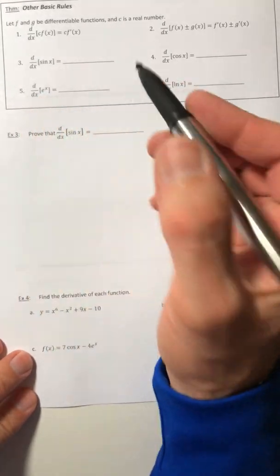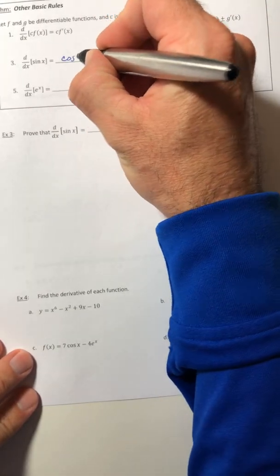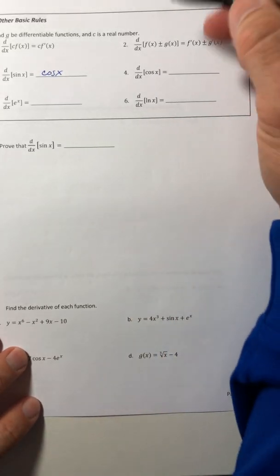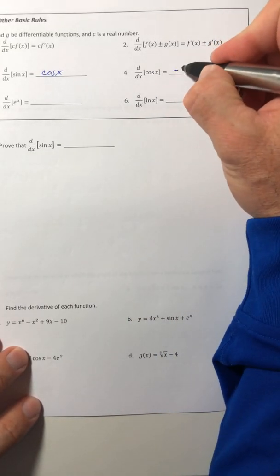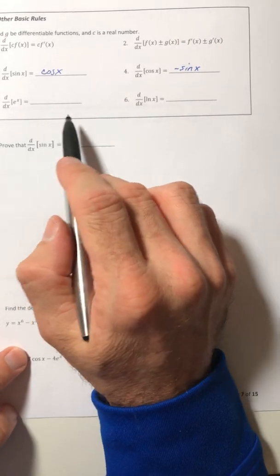The derivative of sine is cosine, and then the derivative of cosine is negative sine. Oh, that's a little unexpected, or is it?